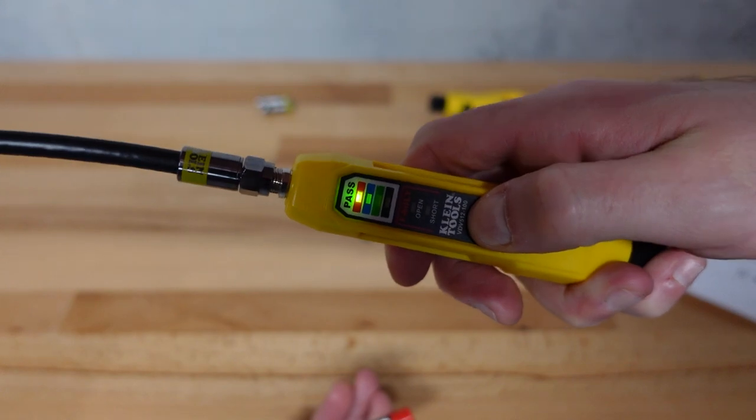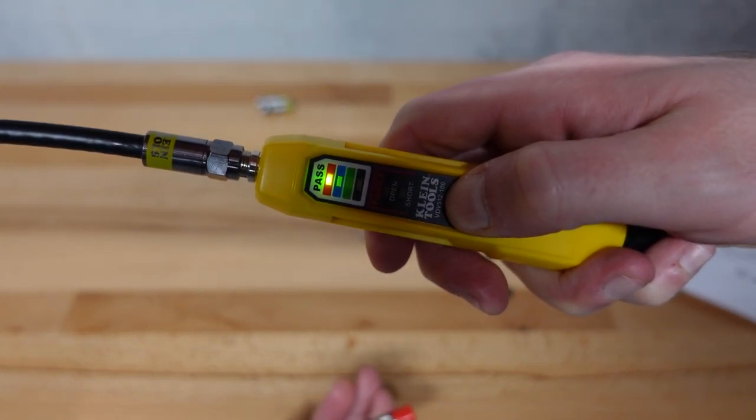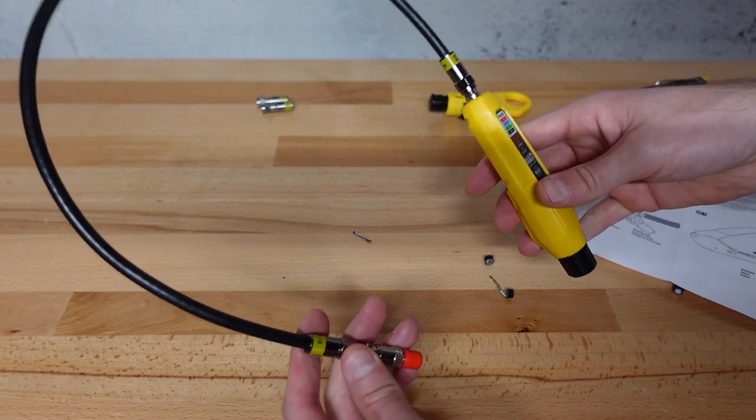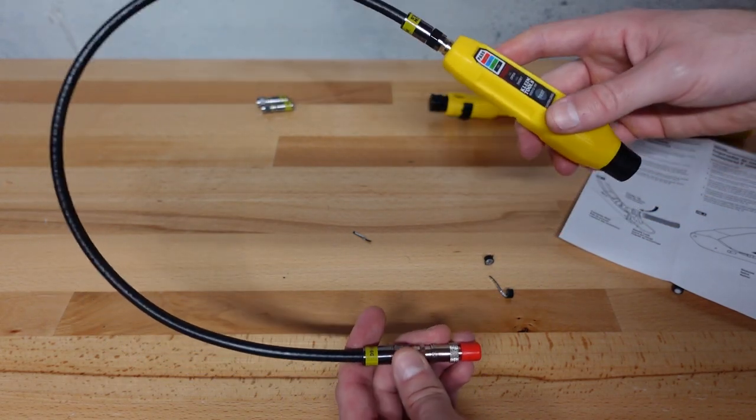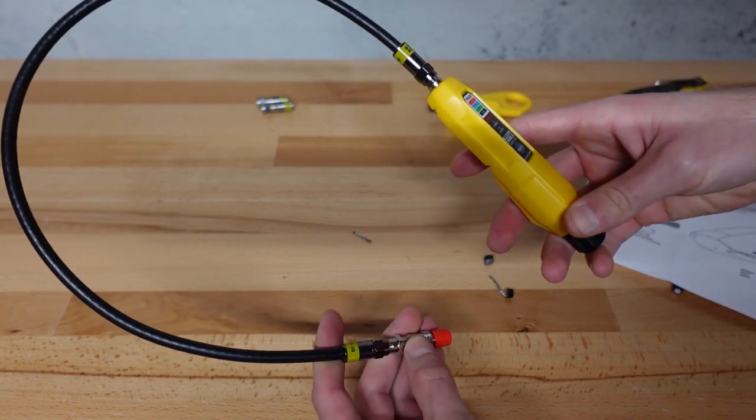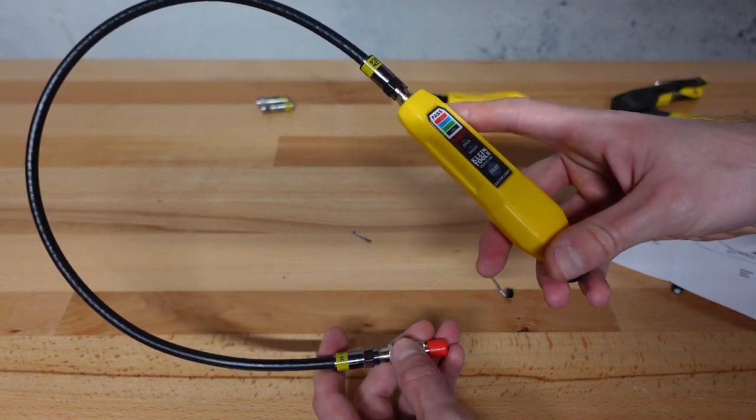You'll see that we have a good connection and it passes. So this is definitely not rocket science. This is very easy to do for the average person. So I highly recommend this Klein tools coax crimper and test kit.